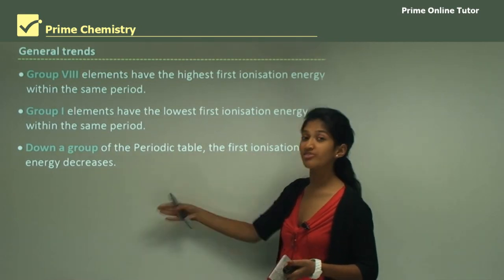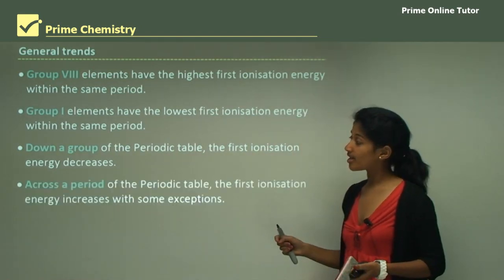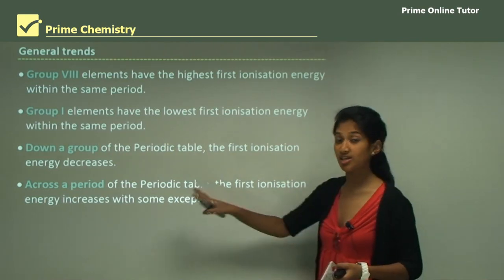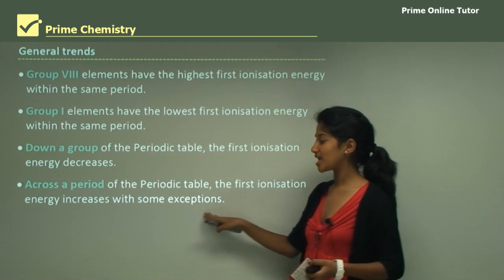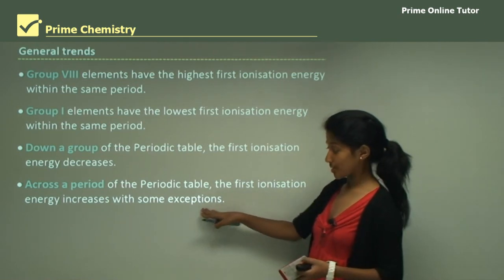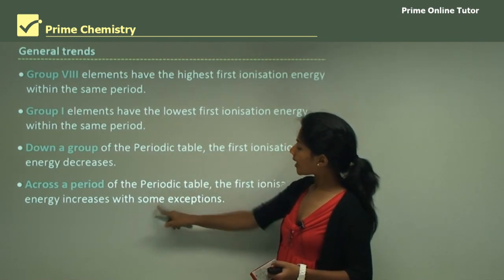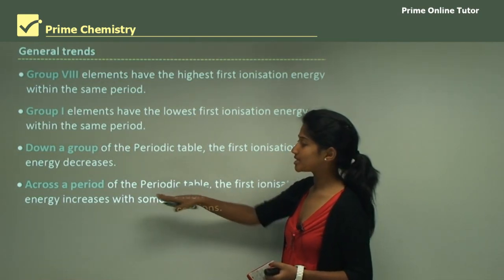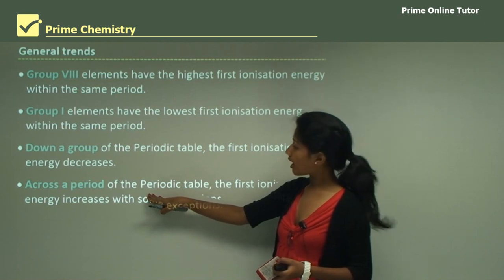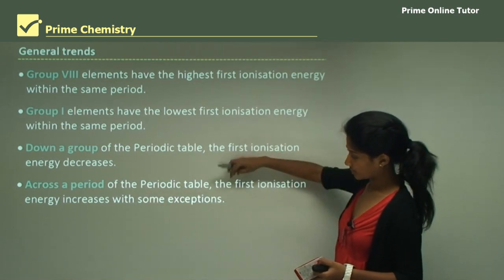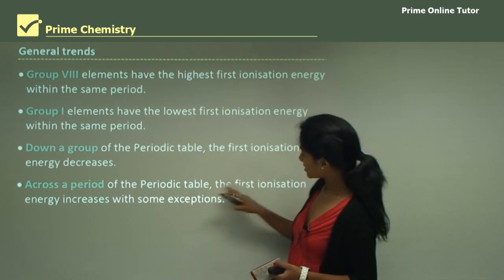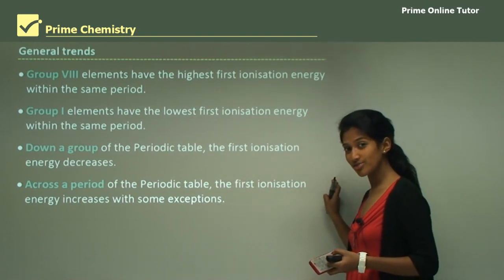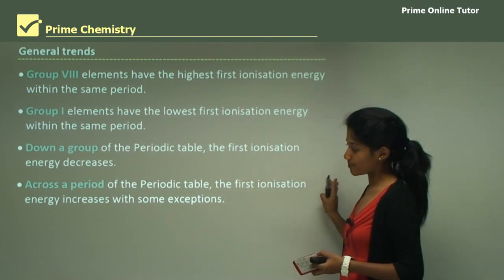Down a group of the periodic table, the first ionization energy decreases, because reactivity increases going down a group. Across a period, the first ionization energy generally increases, with some exceptions due to transition metals. As you move across a period the element becomes less reactive, so the first ionization energy rises.